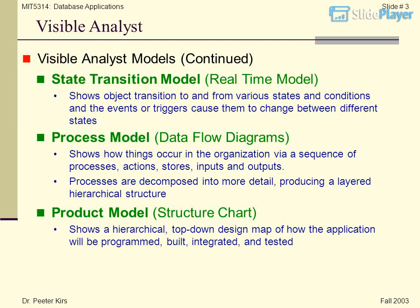Continuing with Visible Analyst models: the State Transition Model, a Real-Time Model, shows object transition to and from various states and conditions, and the events or triggers that cause them to change between different states. The Process Model uses Data Flow Diagrams to show how things occur in the organization via a sequence of processes, actions, stores, inputs and outputs. Processes are decomposed into more detail, producing a layered hierarchical structure.